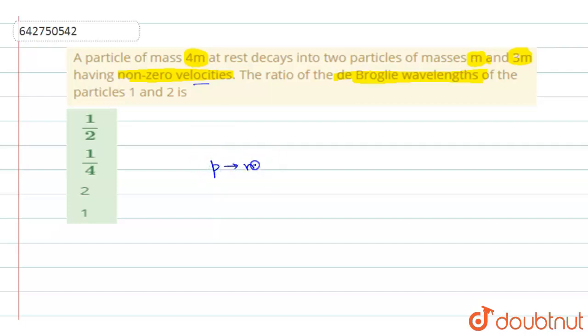So the momentum will be given as m into v, mass into velocity. So they have velocity means they will be having momentum. The de Broglie wavelength will be given with the expression lambda is h by p, where p is the momentum.